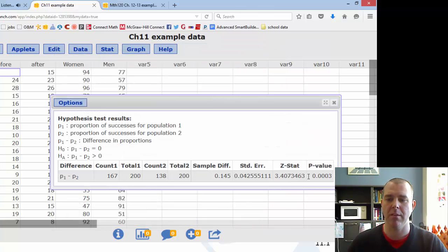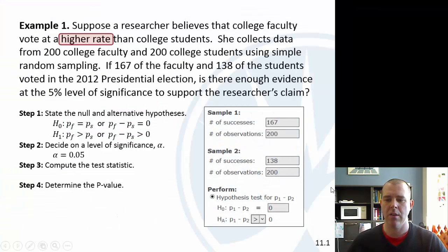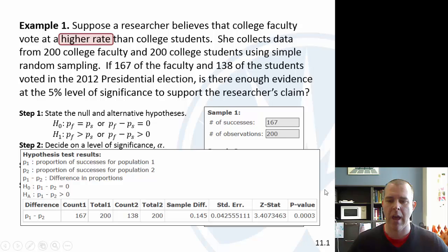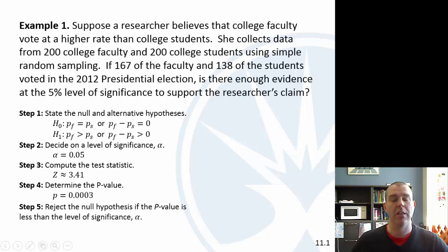We have a pretty big z-stat, pretty small p-value. There's the window that we did. We have a z-statistic that's fairly large, p-value that is small. So when we go to the next step, reject the null hypothesis because the p-value is less than the level of significance.